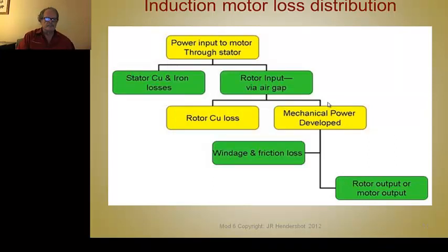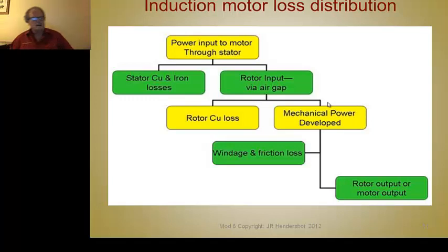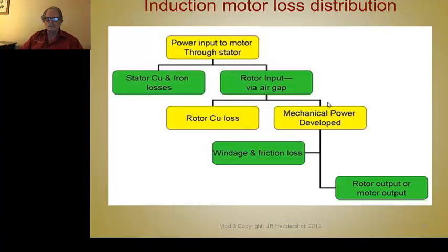You have the input power going to the stator. In the stator, copper losses are produced from the current flow in the conductors — that's called ohmic losses, or I²R losses: current squared times the resistance. Also in the stator, you have losses in the iron itself, in the steel, in the laminations, in the sintered material, which is made up of magnetic material.